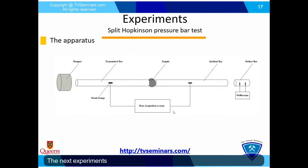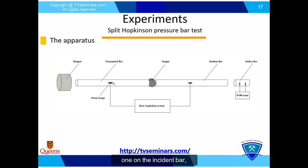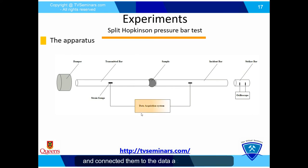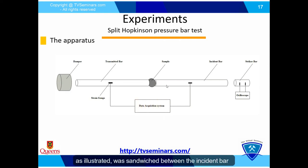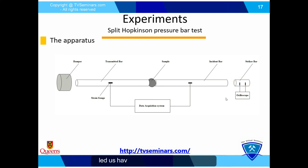The next experiments were carried out using the Split-Hopkinson pressure bar test, as illustrated in this slide. We mounted two strain gauges — one on the incident bar and the other on the transmitted bar — and connected them to the data acquisition system. The sample was sandwiched between the incident bar and the transmitted bar. The striker bar was activated using a gas gun. Changing the gas gun pressure led to different striker bar velocities, which resulted in a range of loading rates.